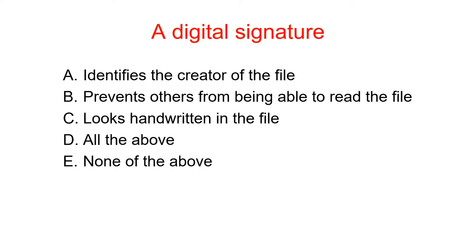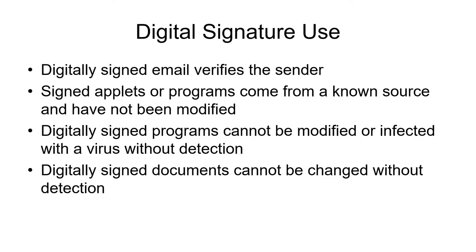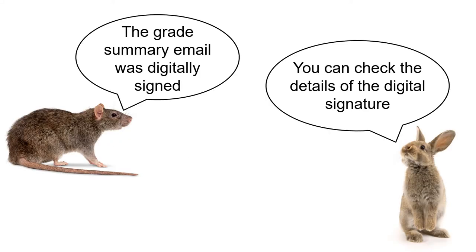You can still read the document, and generally you cannot see the digital signature. Digital signatures can be used in several ways. You can use them for email to verify who sent the email. Frequently on the web, programs that you download are digitally signed so that you can be assured they came from the manufacturer who claims they made them and have not been modified or had viruses or malware attached. Digitally signed programs cannot be infected because the infection will be detected by the digital signature. The grade summary email that Dr. Williams sent to you was digitally signed; you can check the details of his digital signature if your email system allows.